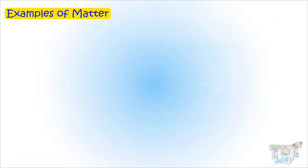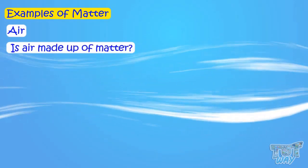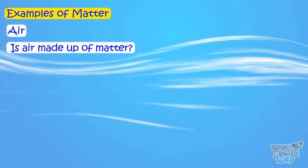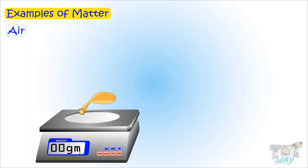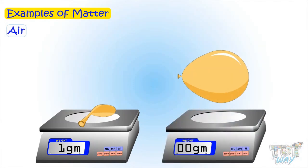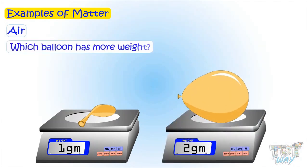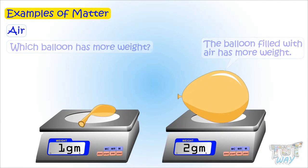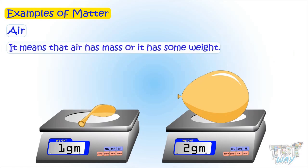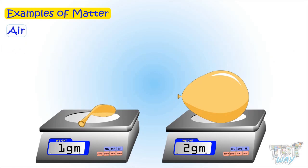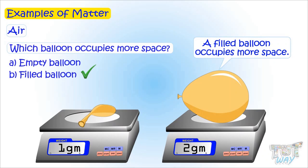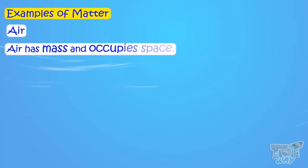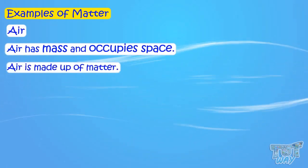Now we will see whether air is made up of matter. In order to prove that air is made up of matter, we should be able to prove that air has mass and occupies space. Take an empty balloon and weigh it. Now fill the same balloon with air and again weigh it. The filled balloon will have more weight — it means that air has mass or it has some weight. Which balloon occupies more space? A filled balloon occupies more space, so it means that air occupies space too.